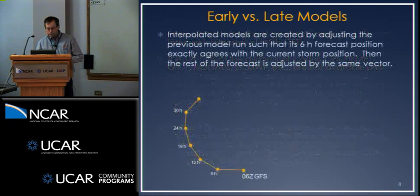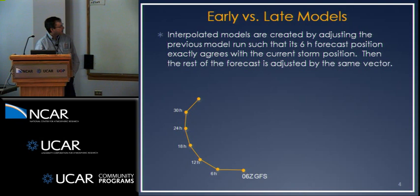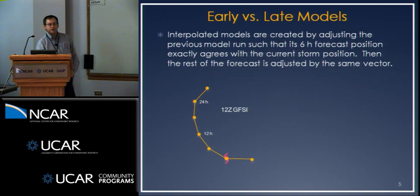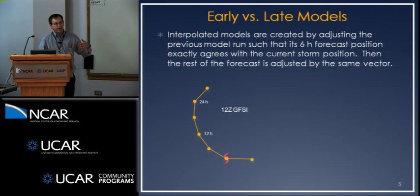We adjust these forecasts so that they apply for the forecast cycle we're currently working with. So again, imagine we're trying to do the 12Z forecast: we go back and take the 6Z GFS, and maybe it had a track like this, with the six-hour forecast valid at 12Z. But the actual 12Z position of the storm is over here, so already it's off in the first six hours. We simply shift this forecast so that the six-hour forecast agrees with the 12Z position — everything shifts, and the original 18-hour forecast from the 6Z run becomes our 12-hour forecast adjusted for 12Z. That's how we take the late models and adjust them so the forecaster can actually use them.